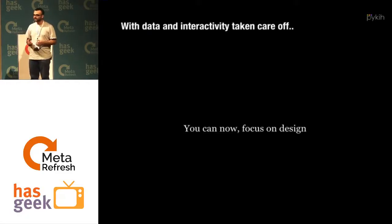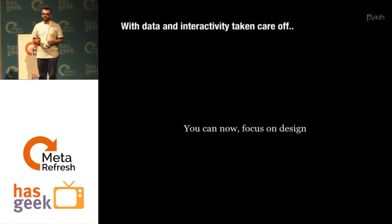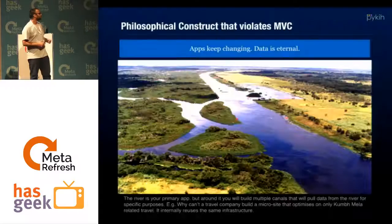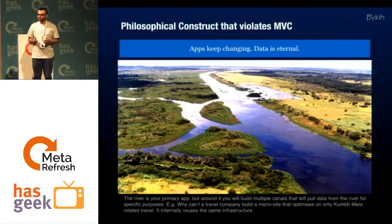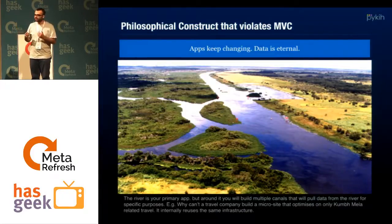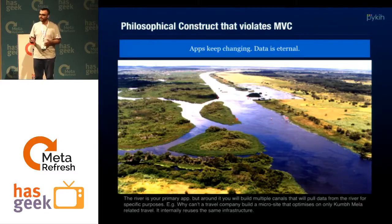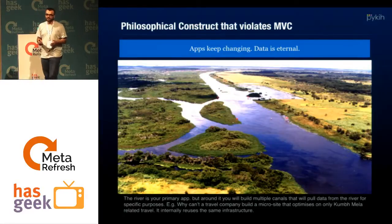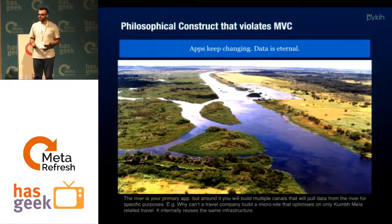The objective with PyQuery is to get rid of the data fetching and interactivity part as soon as possible and focus as much as possible on design. The philosophical construct: if you're a telecom or travel company, your data remains the same over the next five to ten years. But if you use the MVC framework, you closely tie your model layer to your view layer and lose flexibility to build new user interfaces quickly. What's stopping a travel company from building a microsite that reuses the data for a specific event like the World Cup? If your main data is the river, PyQuery lets you build many tiny front-ends that extract the data for specific use cases.